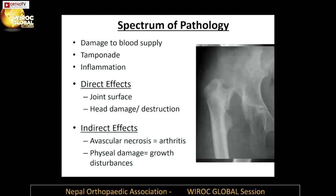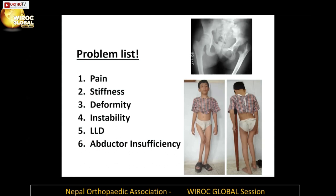With hip sepsis that is neglected and presents late, the most important thing is to create a problem list. Why is this particular child presenting to us? Not on the X-ray first, but on the symptoms: does the child have pain, stiffness of the joint, deformity, instability, limb length inequality, or abductor insufficiency? This will be our problem list, and based on this we proceed.